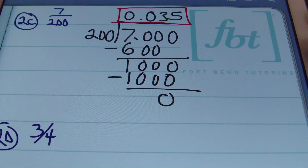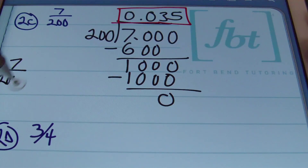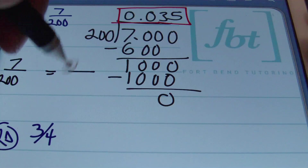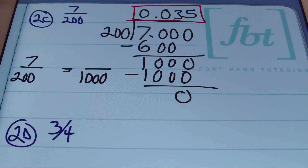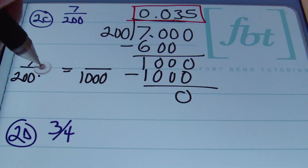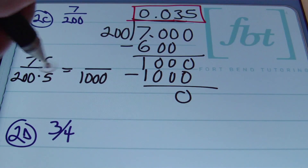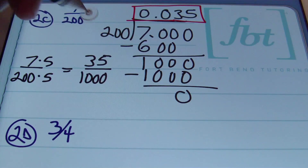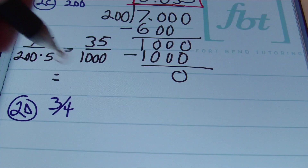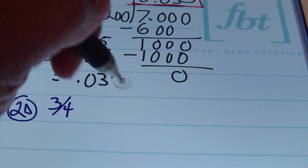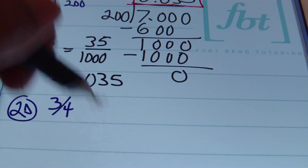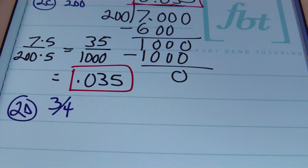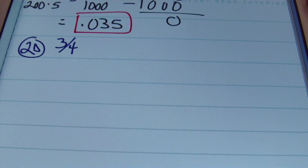Using the power-of-ten method for seven two-hundredths: 200 times 5 gives 1000, so multiply the numerator by 5 as well. Seven times 5 is 35, giving 35 thousandths. Written as a decimal, the five must be three places from the decimal — so the answer is 0.035.